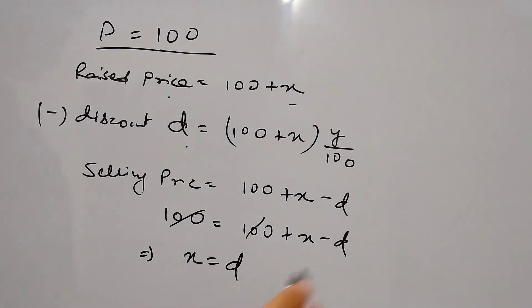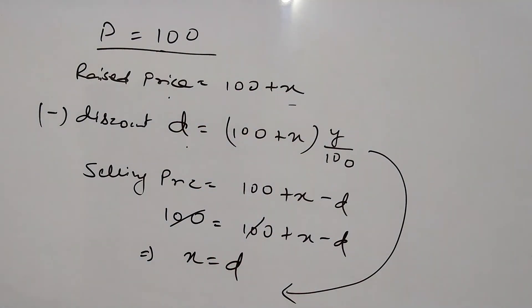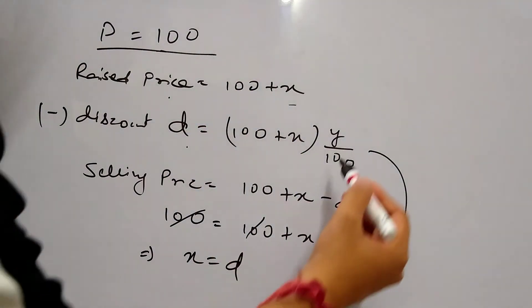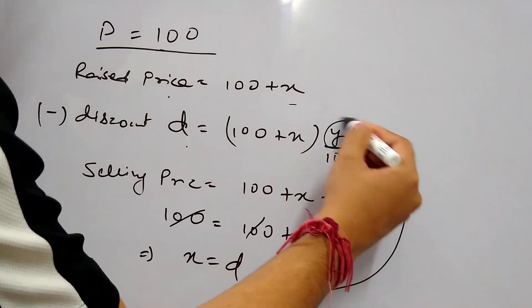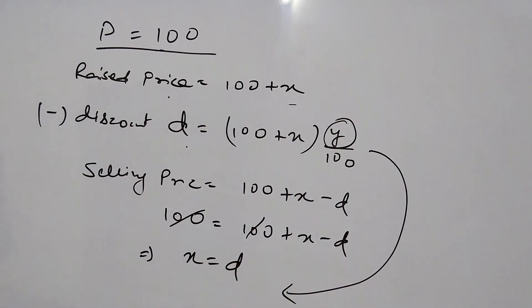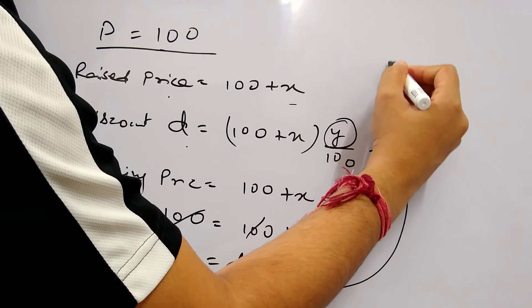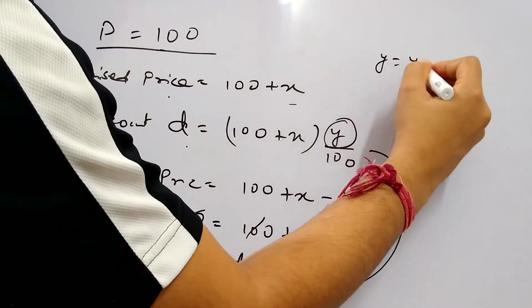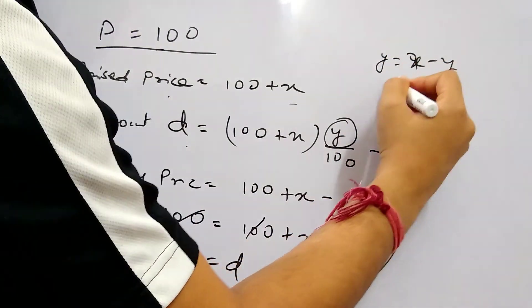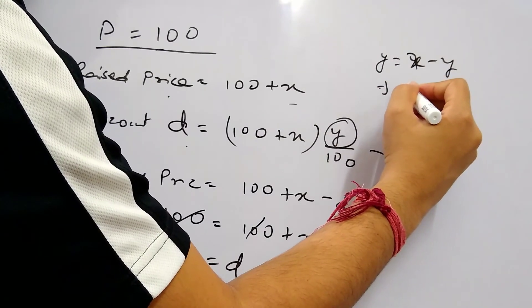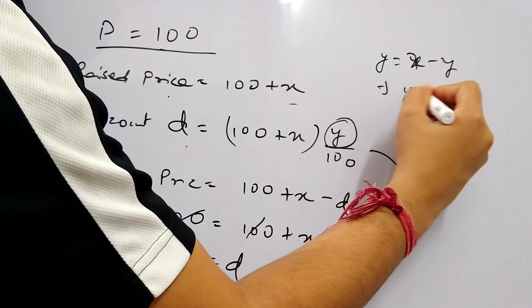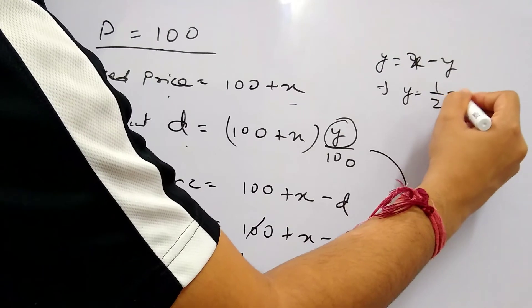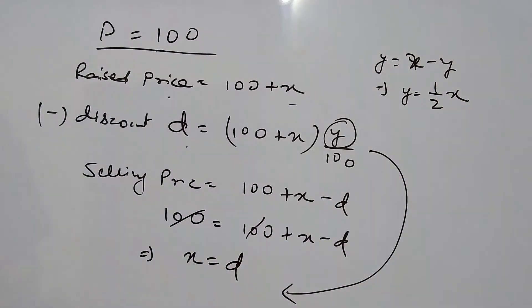So X equals to D, we can compare X with this. But before comparing X we have a Y component here. So if you remember in the question it is also given that Y is equal to X minus Y, that is 2Y equals to X, so Y equals to X by 2.